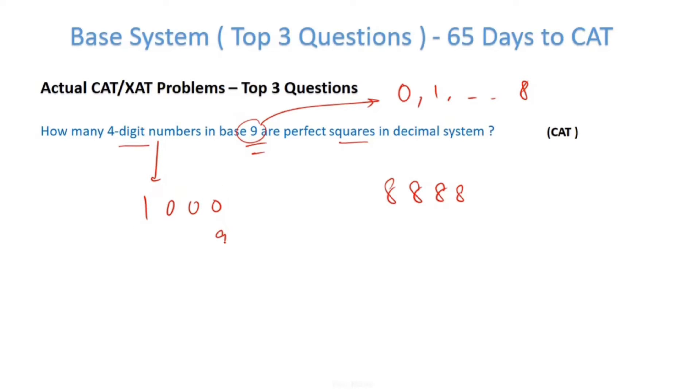So now what is this number in decimal system? In base 9, this is 9^0, 9^1, 9^2, 9^3. So this is 1×9³ + 0×9² + 0×9¹ + 0×9⁰. This becomes 729.